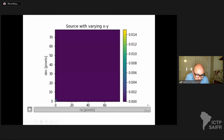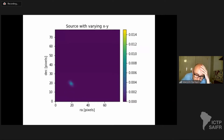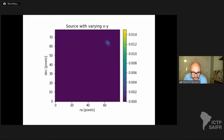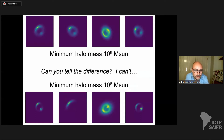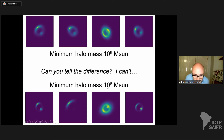Here's a video showing a source moving in orientation relative to the lens in the middle. As it goes close to the middle you get this Einstein ring. We've simulated a huge number of these by changing the source position relative to the lens, with and without different amounts of substructure going down to different masses. At the top are lensed images where the minimum halo mass is 10^9 solar masses; at the bottom the substructure goes down to 10^6 solar masses. Can you tell the difference? I can't.